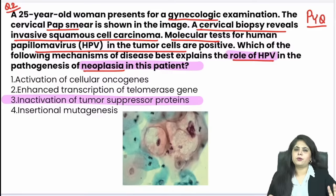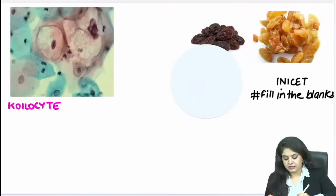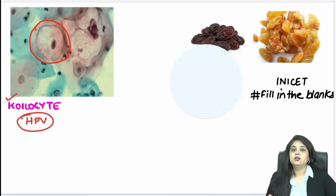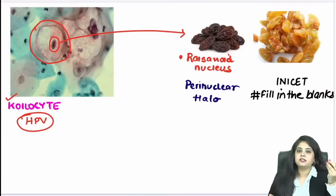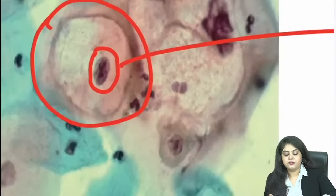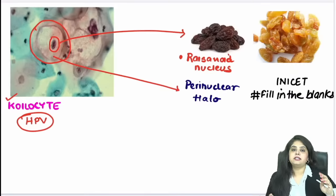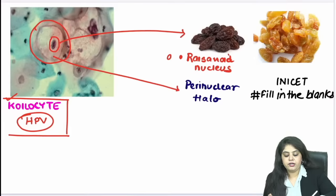Now let us do all the fill-in-the-blanks. The picture I gave you — all of you identified it as a koilocyte. Why is it a koilocyte and how is it associated with HPV? There are two points for koilocyte identification. Point one: the nucleus looks like a raisin — it is a raisinoid nucleus. Point two: around the nucleus there is a white area — a perinuclear halo. So: raisinoid nucleus with perinuclear halo → think HPV.